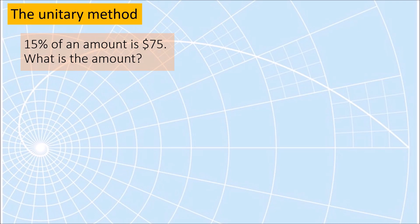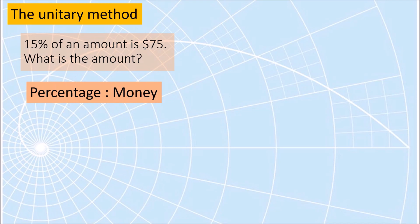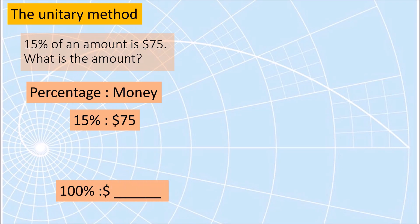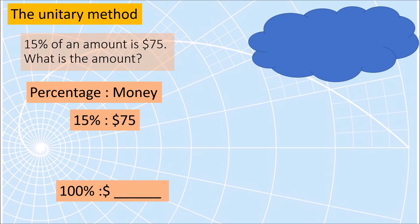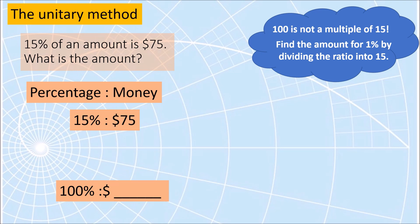Let's check your work. The problem says 15% of an amount is 75 dollars — what is the amount? We can also use the unitary method for percentages. We know the ratio of percentage to money which is 15 is to 75 dollars, and we want to know 100% is how many dollars. Since 100 is not a multiple of 15, we will divide both 15 and 75 by 15 to get one percent. So 1% is to 5 dollars.